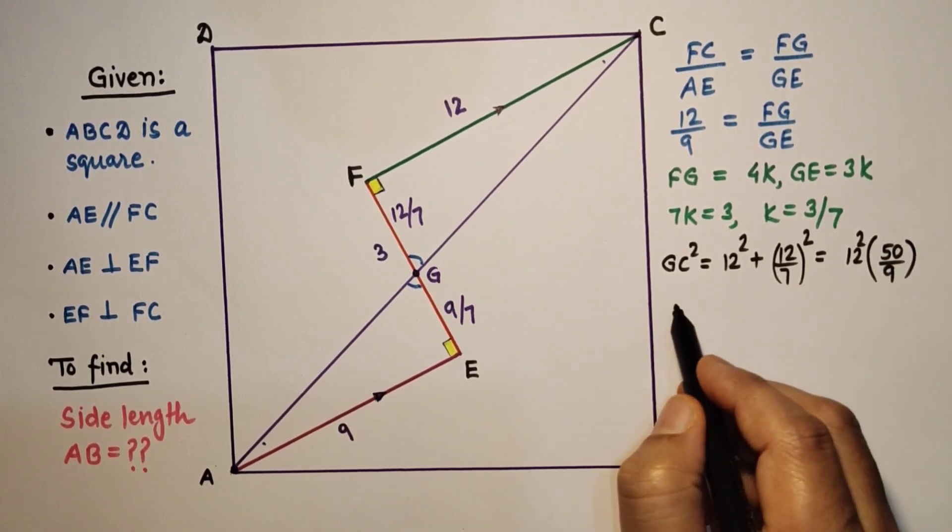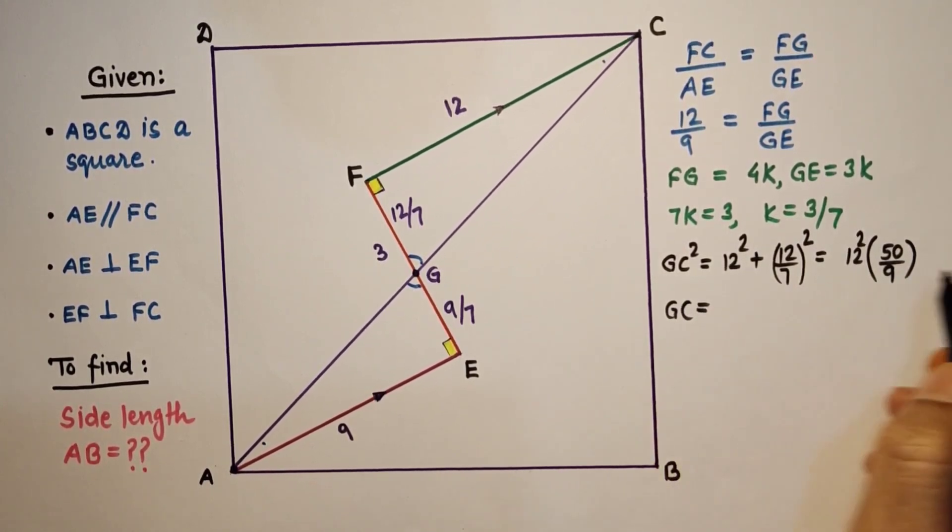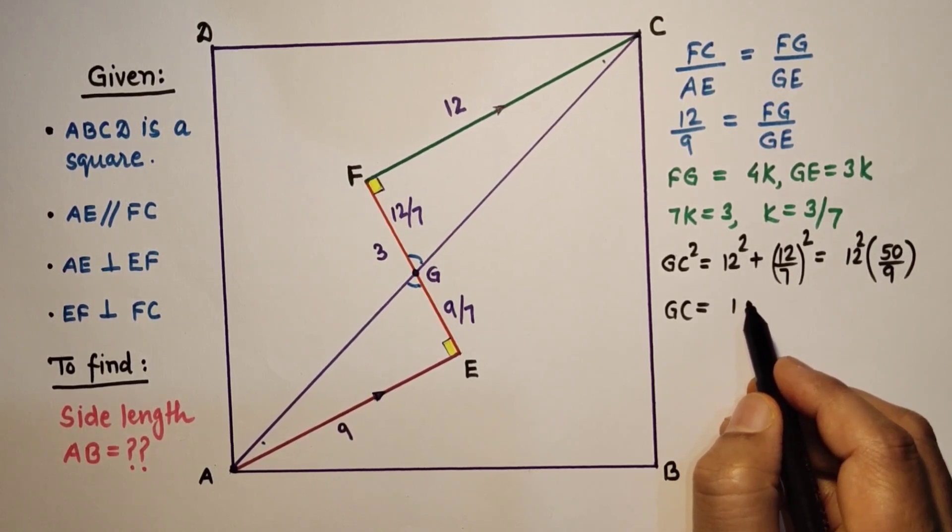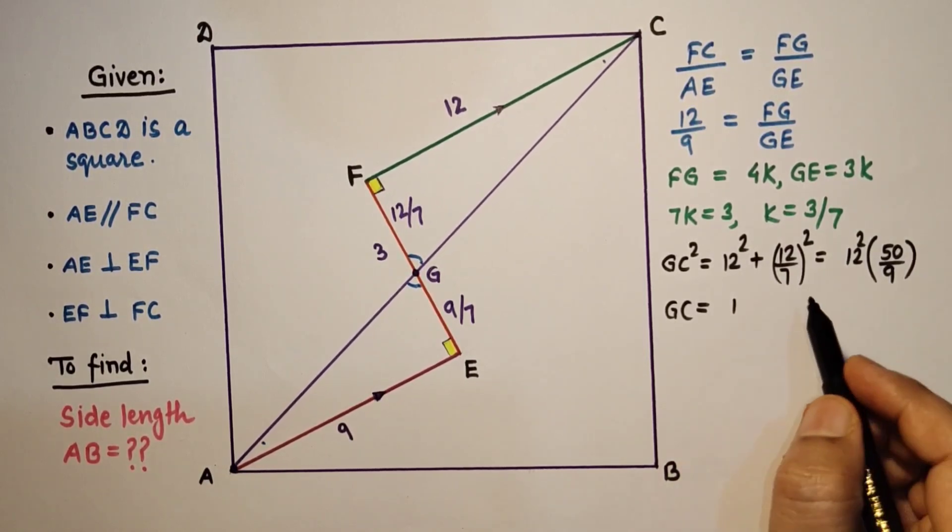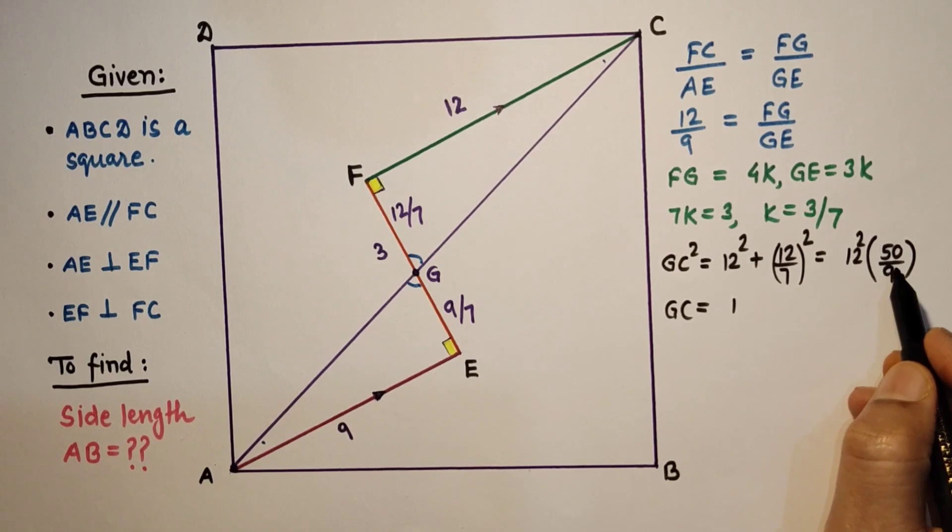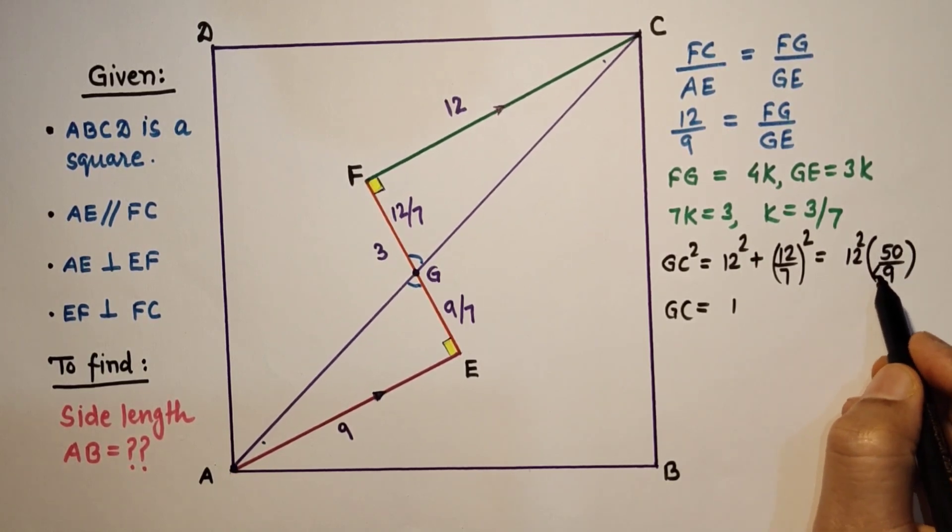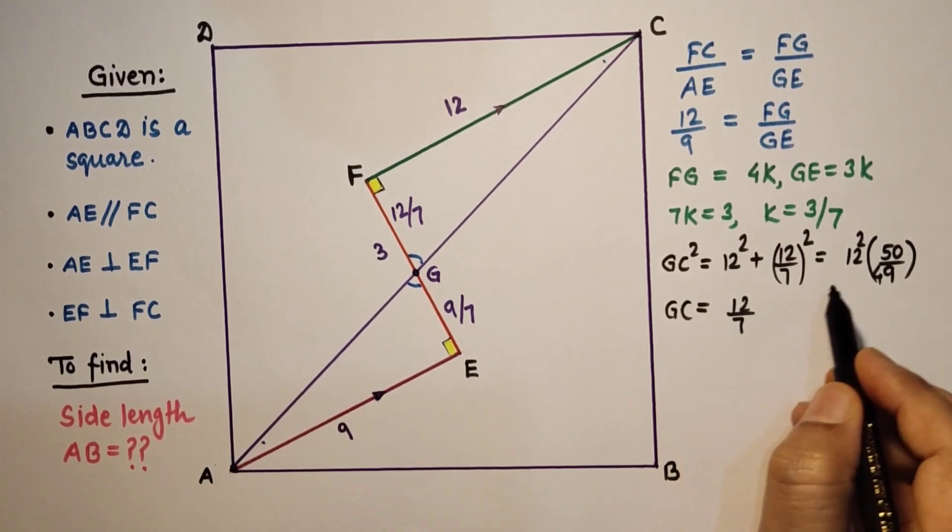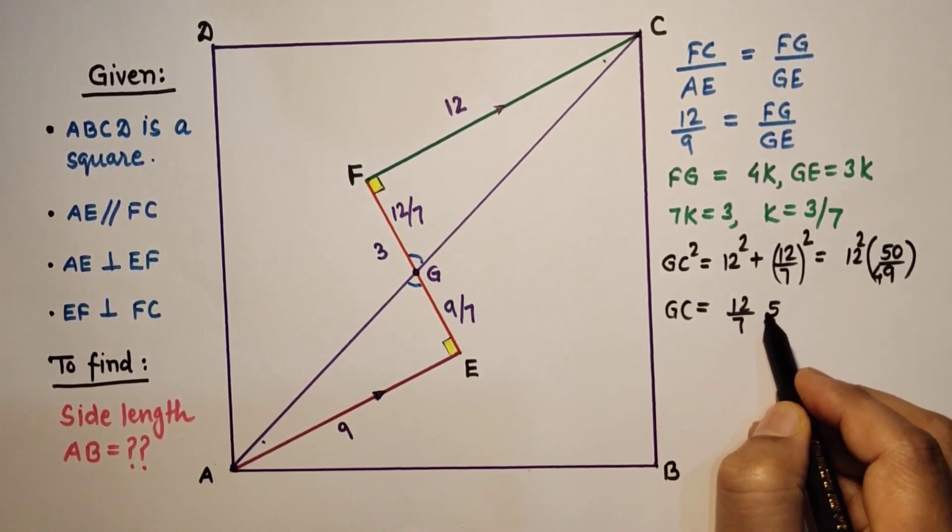And therefore GC is equal to square root of this, 12 by 7 root 50. So 12 by 7, root 50 is 5 root 2, which is 60 root 2 by 7.